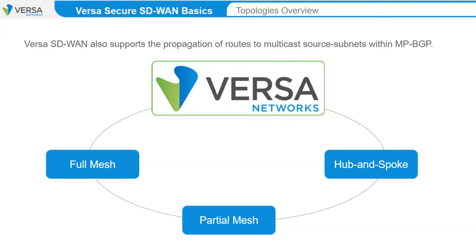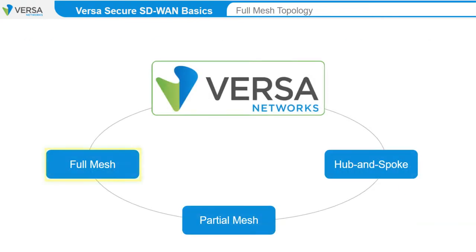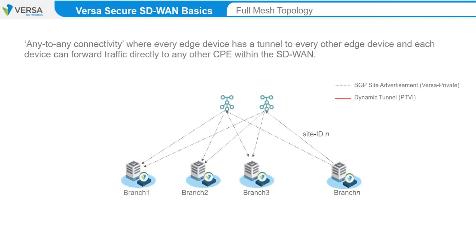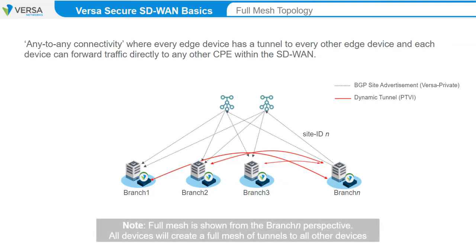The first topology we will discuss is the Full Mesh topology. Full Mesh is defined as any-to-any connectivity, where every edge device has a tunnel to every other edge device, and each device can forward traffic directly to any other CPE within the SD-WAN. Note that Full Mesh is shown from the Branch N perspective, and that all devices will create a Full Mesh of tunnels to all other devices.